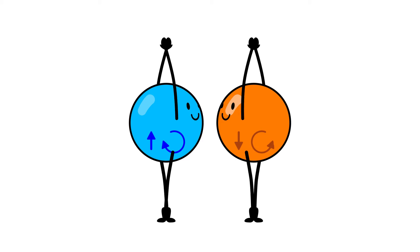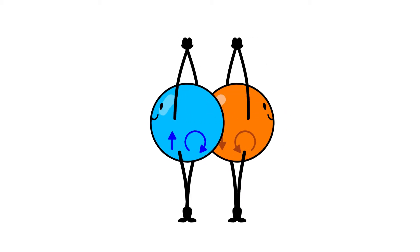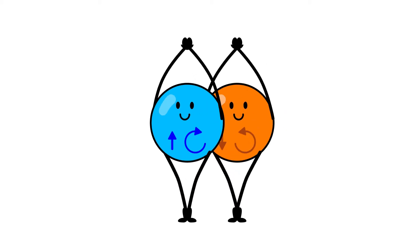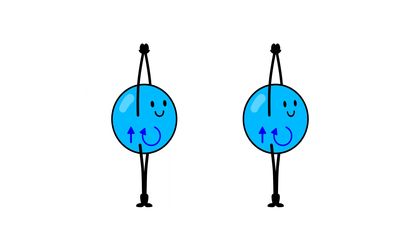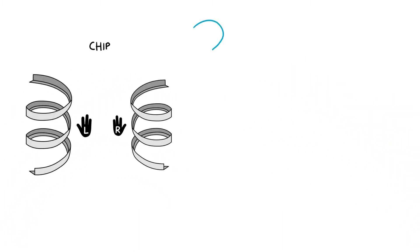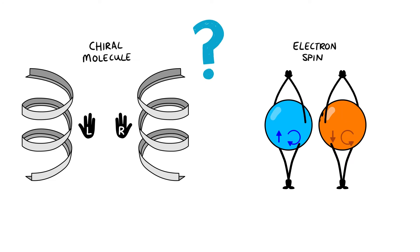Quantum mechanics shows that two electrons can occupy the same volume if they have opposite spins. When two electrons have the same spin, they repel each other. How do the chirality of molecules and spin relate?